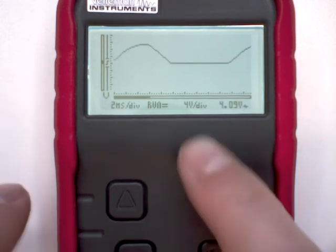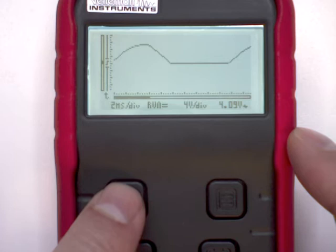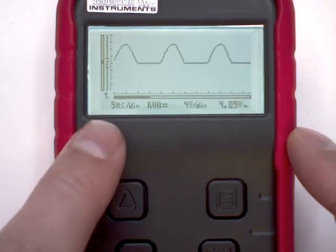We're going to switch to manual setting and we're going to change the time per division so that we get some more periods on screen like this.